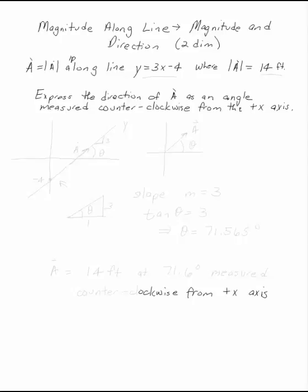Vector A has magnitude 14 feet up along the line y equals 3x minus 4. We want to express the direction of A as an angle measured counterclockwise from the positive x-axis.